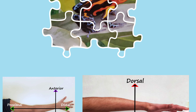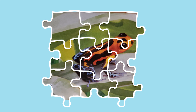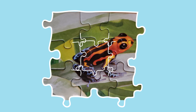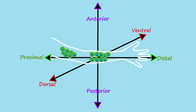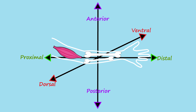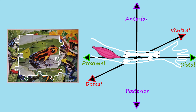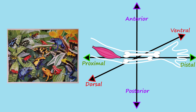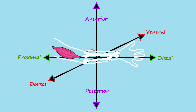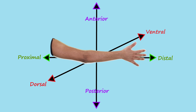Next, once in the right spots, just like nearby puzzle pieces create small images, cells in the same region form different tissues. From there, as images create our puzzle's overall picture, these correctly placed tissues create our limb.